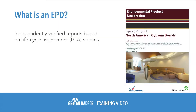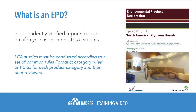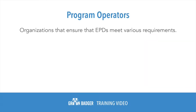First, what is an EPD? Environmental product declarations are independently verified reports based on the life cycle assessment, or LCA, of the product. The LCA studies must have been conducted according to a set of common rules known as product category rules, or PCRs. These must then be peer-reviewed. EPDs are managed and created by program operators — organizations that ensure that the EPDs meet the various requirements.